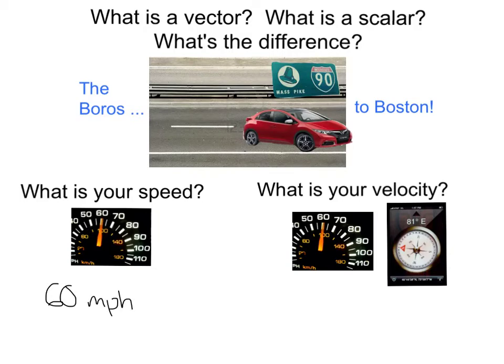that speed is 60 miles per hour. But if I ask you what is your velocity, you again would look at the speedometer and say 60 miles per hour, but you would need to add in what direction we're traveling in, and from the Boroughs to Boston, that would be east. So while your speed would be 60 miles per hour, your velocity would be 60 miles per hour east.